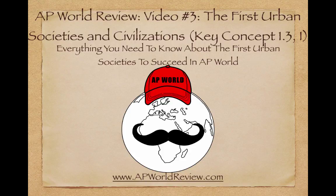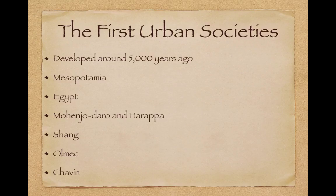Welcome back, AP World peeps. We have a good video for you today — lots to cover. The first urban societies and civilizations. You should be very familiar with these and be able to explain them in potential short answer questions. They developed around 5,000 years ago and are found in Mesopotamia, Egypt, Mohenjo-daro and Harappa, Shang, Olmec, and Chavin.